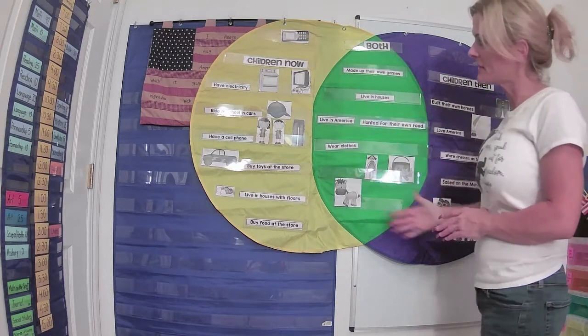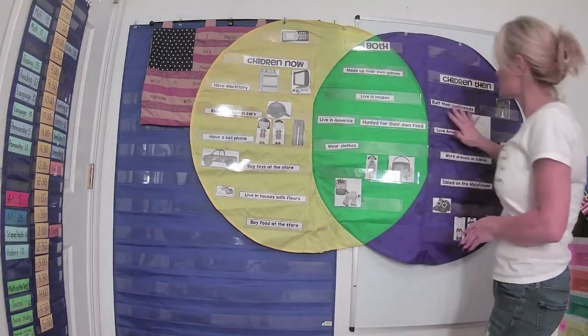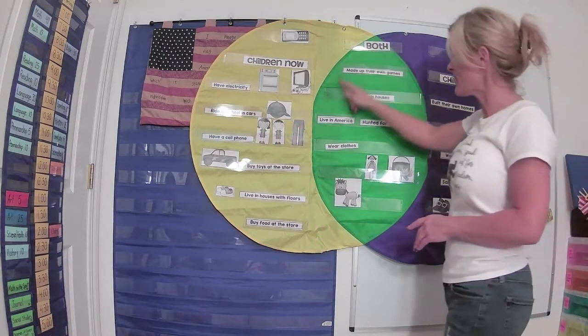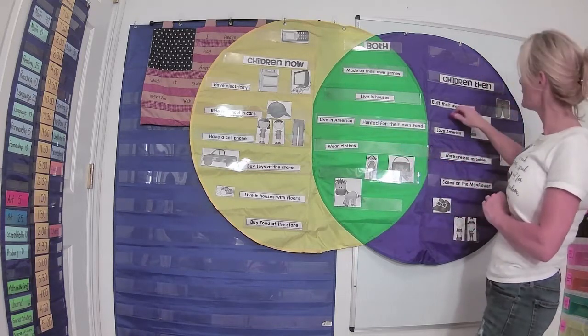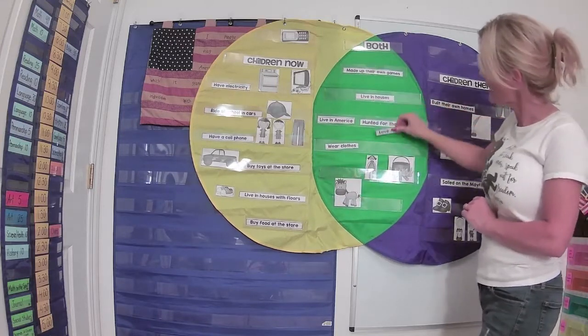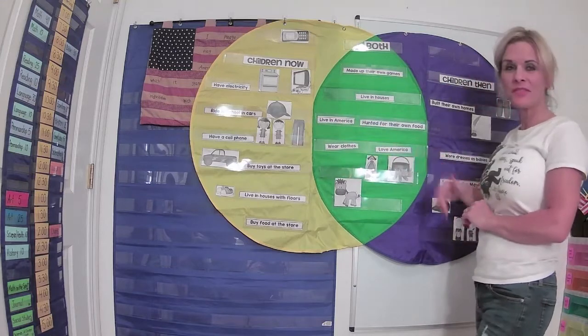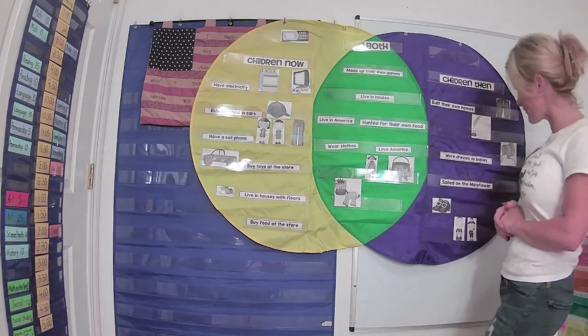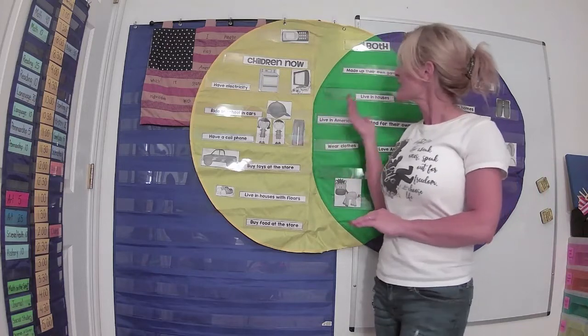Boys and girls, from looking at these different things and comparing and contrasting them, we found out that there are some things that are just true about children now, some things that were just true about children in the past, and some things that are true about both. I accidentally put 'love America' over here, but I'm glad I double-checked our work. We are hopeful that children in the past and children now both love America. Look at how many things we have — clothing, one of our needs; shelter, another need. We are very blessed and we're going to be thankful for all those things, whether it's in the past, in the present, or in the future. It's always good to be thankful.